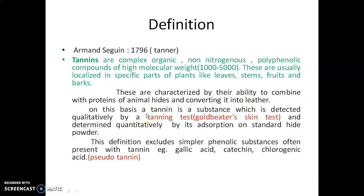On this basis, a tannin is a substance which is detected qualitatively by the tanning test or gold beater skin test, and determined quantitatively by its adsorption on standard hide or skin powder. This definition excludes simpler phenolic substances often present with tannin, like gallic acid, catechin, and chlorogenic acids — these are known as pseudo tannins.